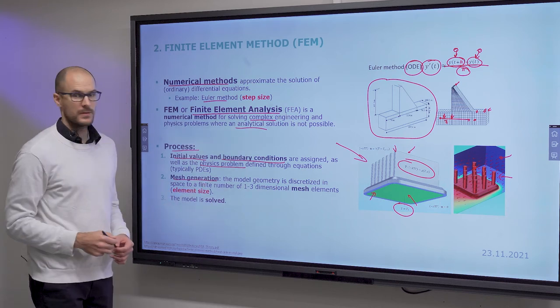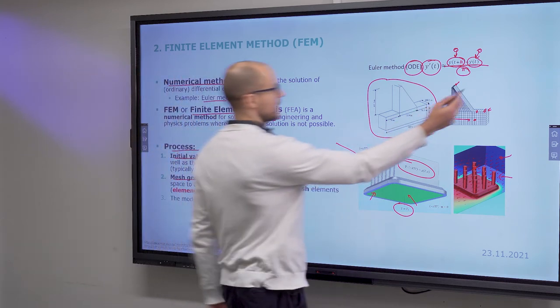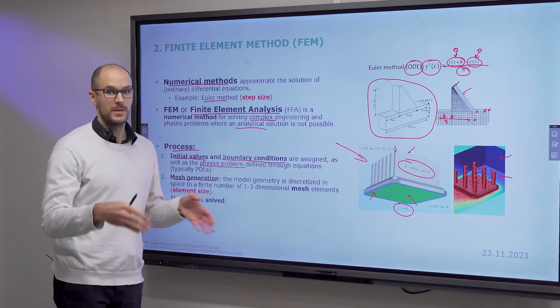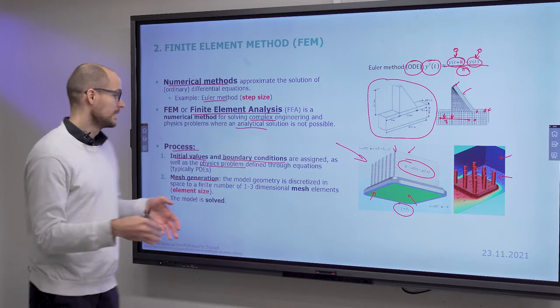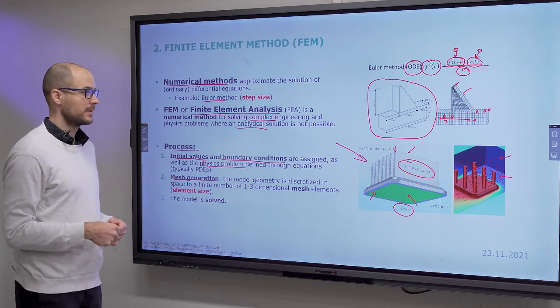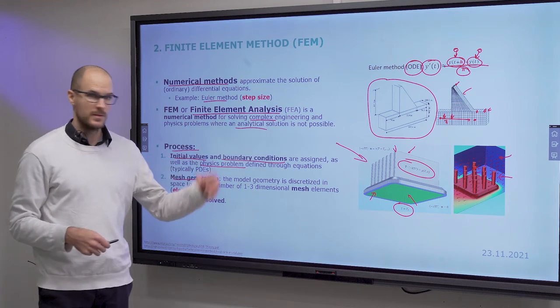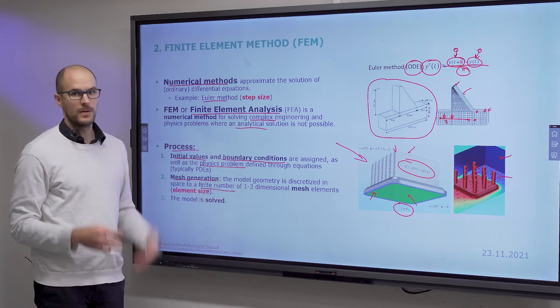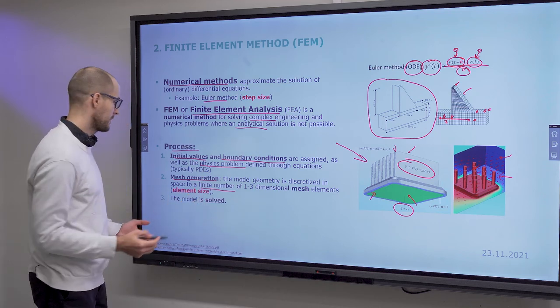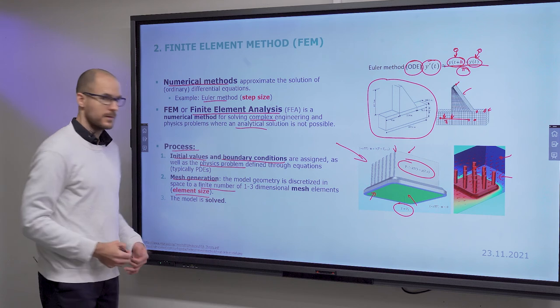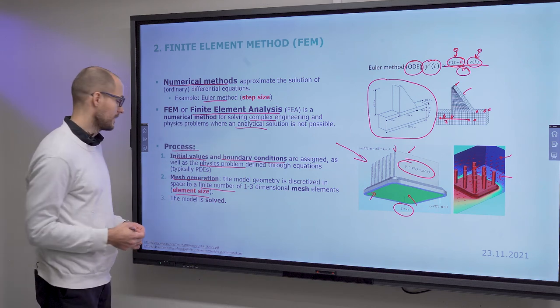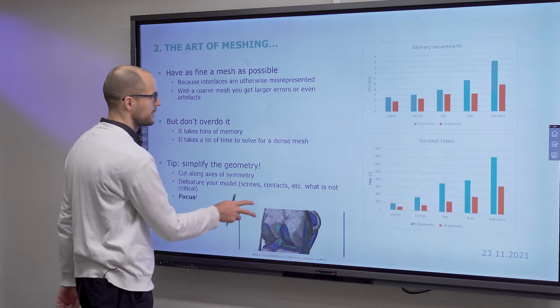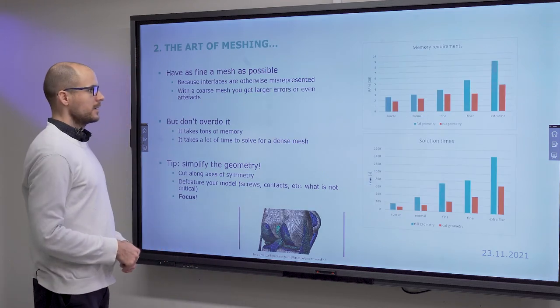And mesh generation, so again, remember we cut our model into finite step sizes, or finite elements of a certain step size. This is your mesh, and you generate the mesh by cutting up, by discretizing your problem to a finite number of one to three dimensional mesh elements. The distribution defined, or the size defined by the mesh size, or the element size. And then the model is solved by a solver program.